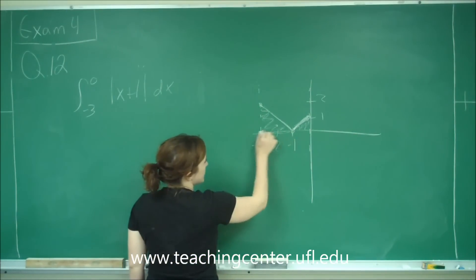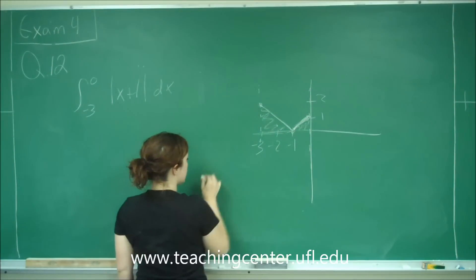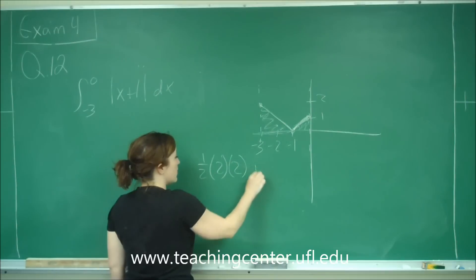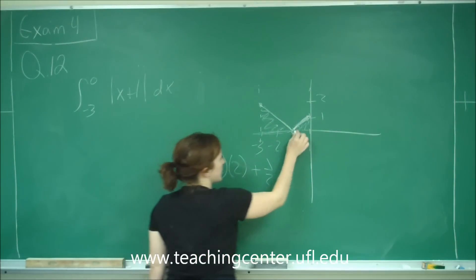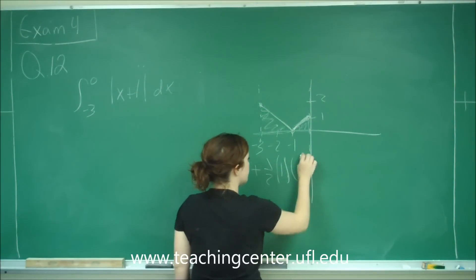So my base here for my bigger triangle is a base of 2, and my height is 2. So I get one half times 2 times 2 plus one half, and then the area of this triangle, which is 1 by 1.